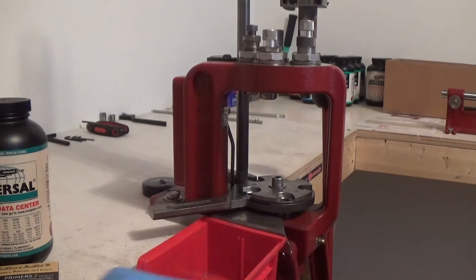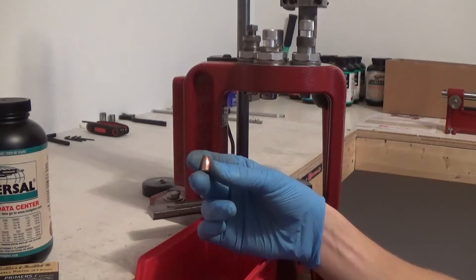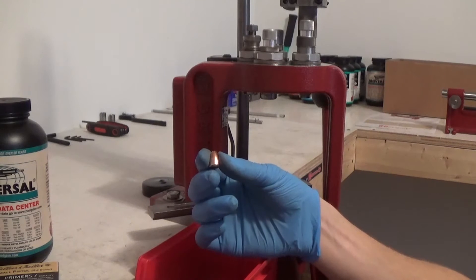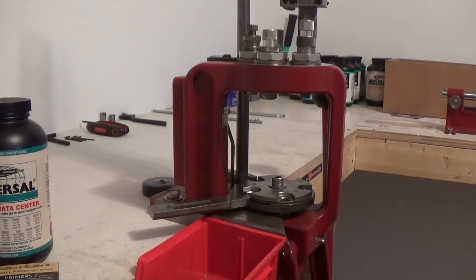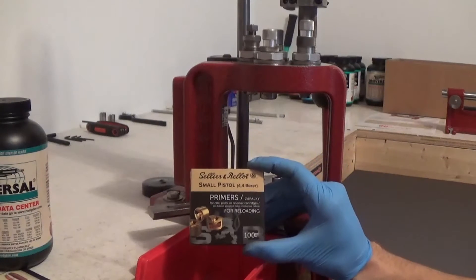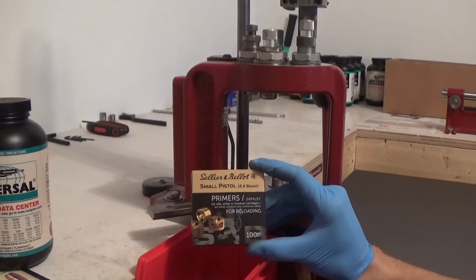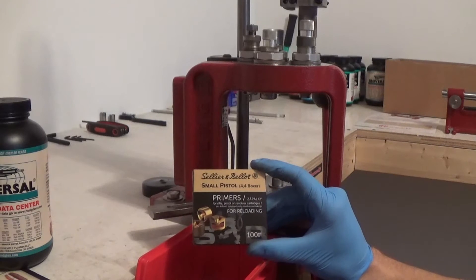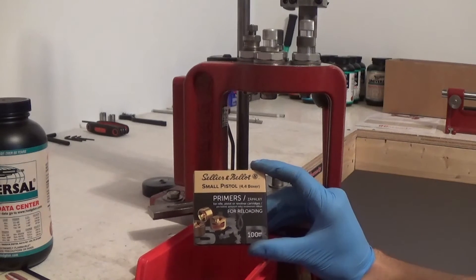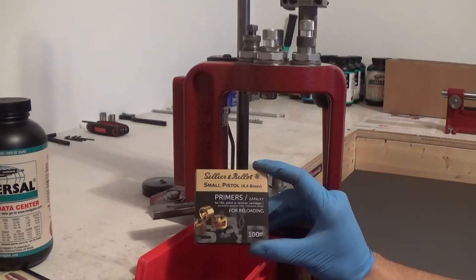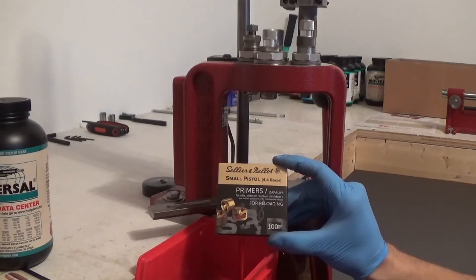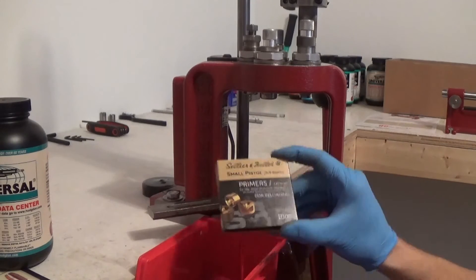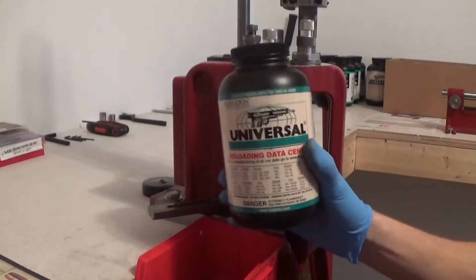Today I'm going to be using a 115 grain round nose. These are Berry's bullets. You can get them pretty cheap if you buy them in bulk. I got S&B primers. These primers work great guys. They're a little cheaper than CCI or Winchester primers but I've never had one fail to fire, so save close to ten bucks and still get a whole brick of primers.